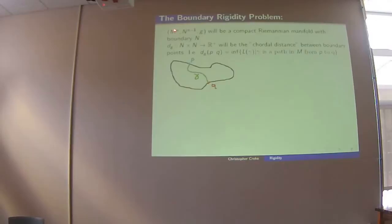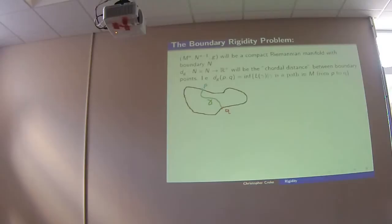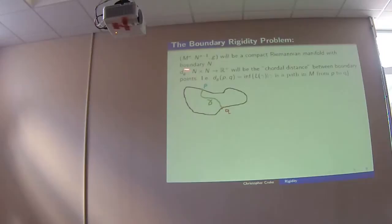The setup is we'll have a manifold M, n-dimensional, with a boundary and a Riemannian metric — a compact Riemannian manifold with boundary M. At each point you have an inner product between any two tangent vectors, so you know lengths of curves and angles between curves. Given such a thing, for a pair of points on the boundary, D_G is a map from boundary cross boundary into the positive reals, which is the chordal distance.